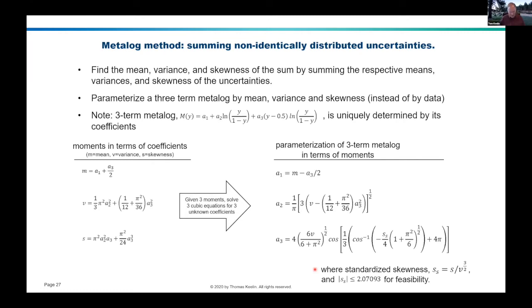If it's greater than 2.07, then it's an infeasible three-term metalog. But so long as it's within that range — about the skewness of the exponential distribution — then it all works fine.